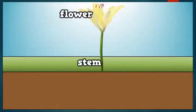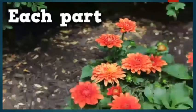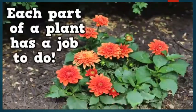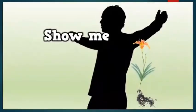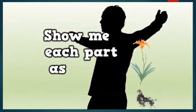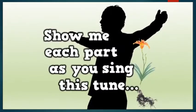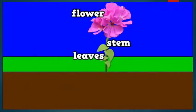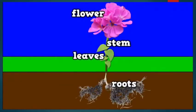Flower, stem, leaves, and roots — each part of a plant has a job to do. Show me each part as you sing this too. Flower, stem, leaves, and roots.